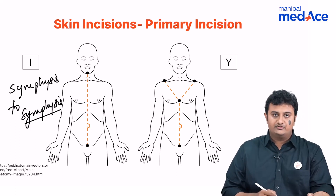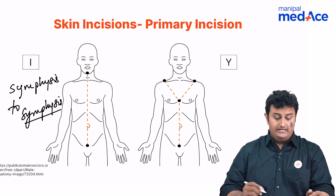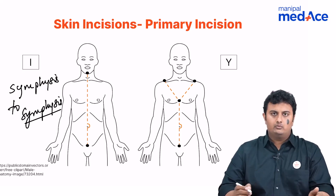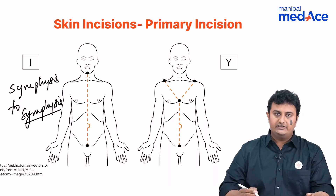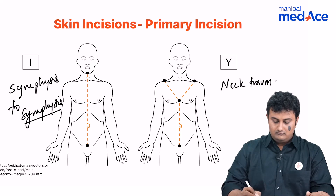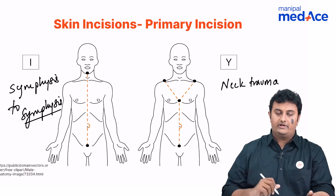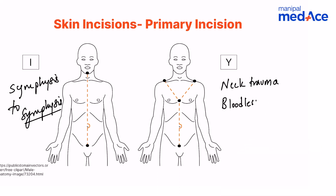The second incision we have to talk about is known as the Y-shaped incision. We already have one way of doing it, so why do we need a second one? The Y-shaped incision is usually done when there is neck trauma. It is also sometimes called bloodless dissection.